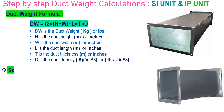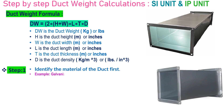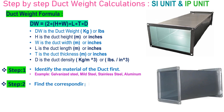Step 1: First, identify the material of the duct — for example, galvanized steel, mild steel, stainless steel, or aluminum. Step 2: Find the corresponding density of the duct material.